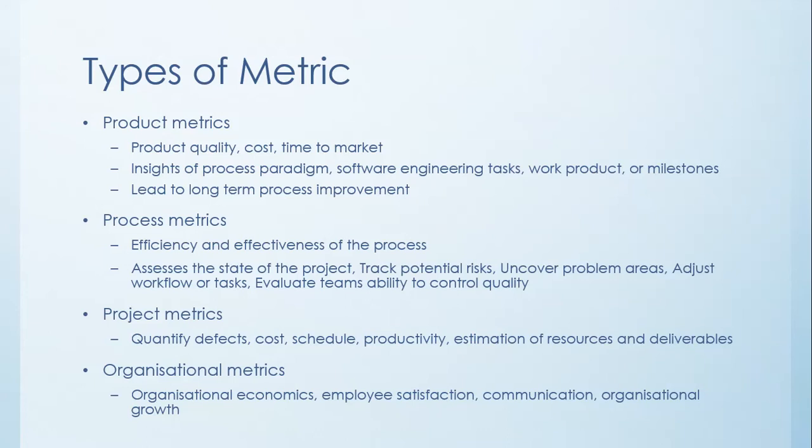What we are concerned about are metrics for software engineering as a body. This actually falls into four main categories. The first type are product metrics. That concerns the product quality, cost, the time to get to the market for that product. It gives you insights of the process paradigm, the software engineering tasks, the work product, milestones that you're going to meet, and in general metrics about product lead to long-term process improvement.